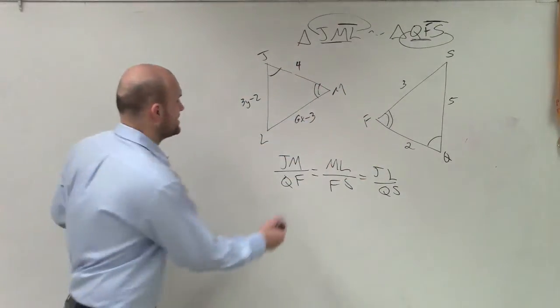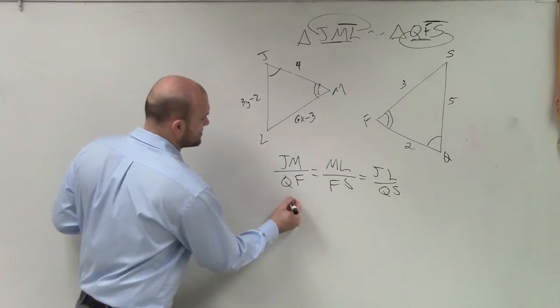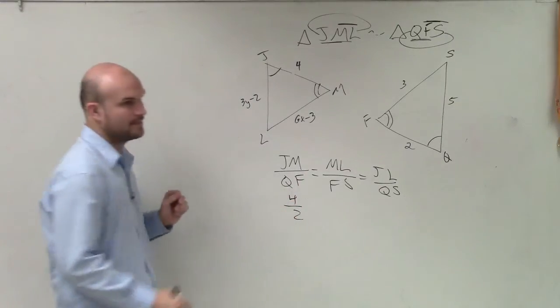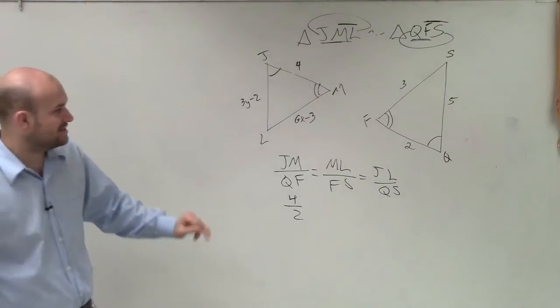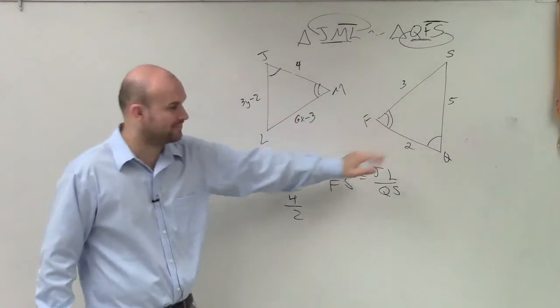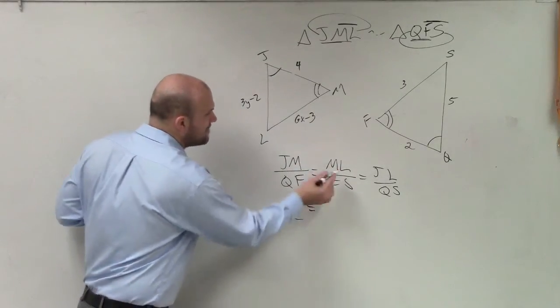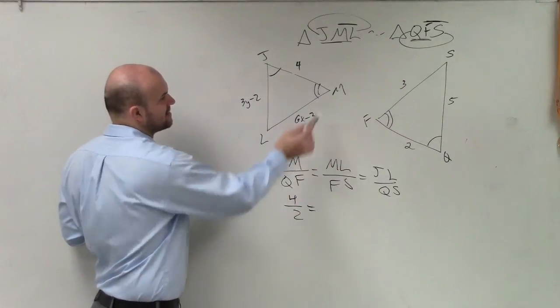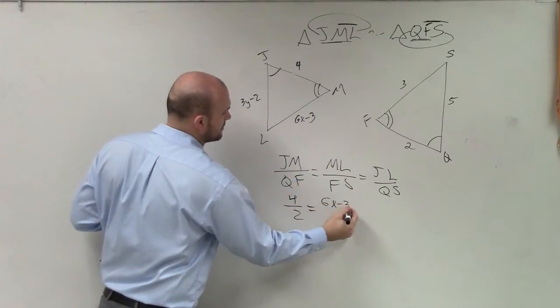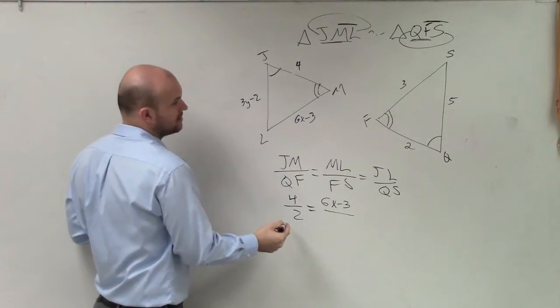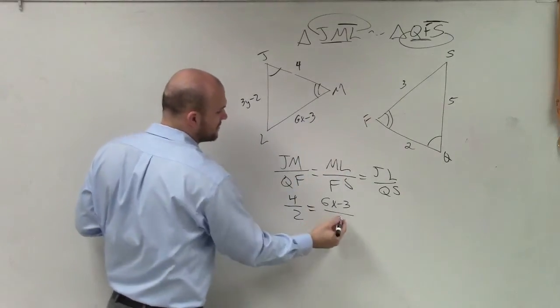So therefore, I can say that JM is 4 is to 2. Now I'm going to leave it as that. I know you can divide the 2 into there, but let's leave it as 4 is to 2. The next one, ML is to FS. ML is 6x minus 3 over FS, which is 3.